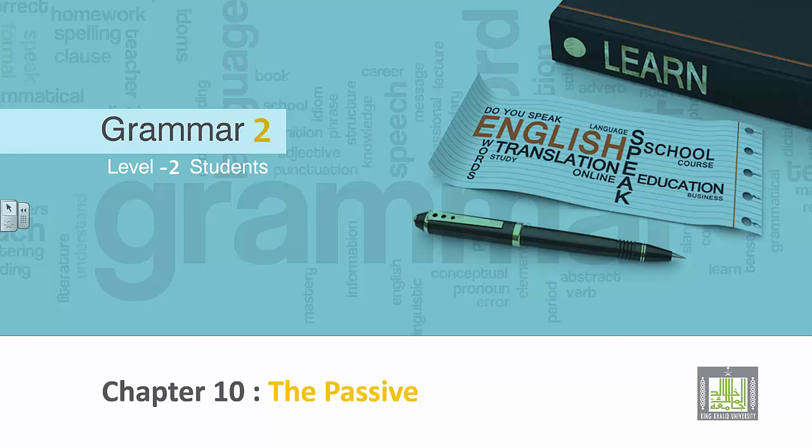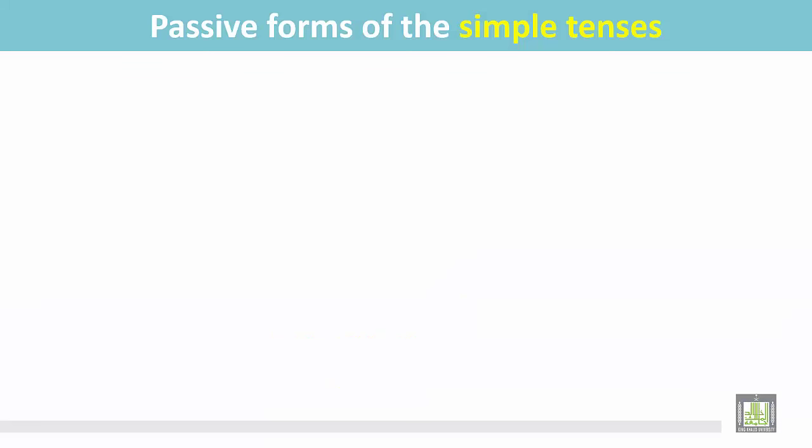Grammar 2 for level 2 students. Chapter 10: The Passive. Passive forms of the simple tenses.